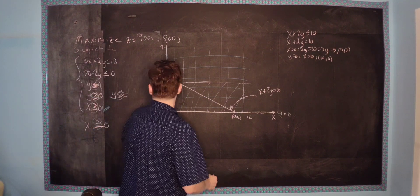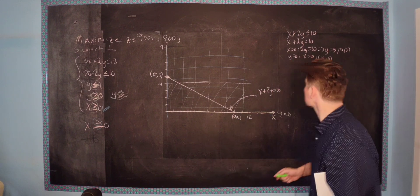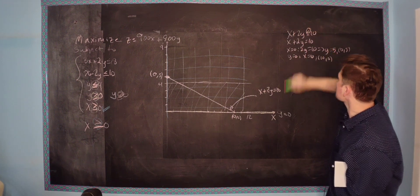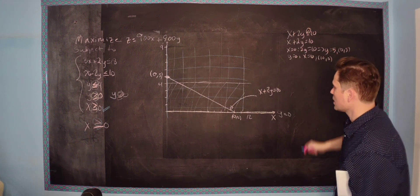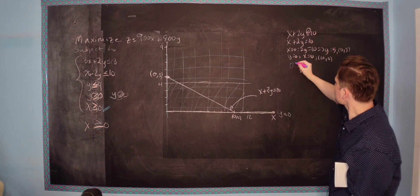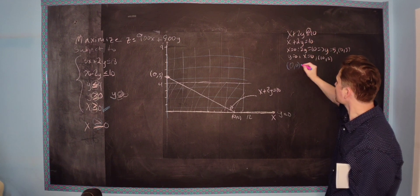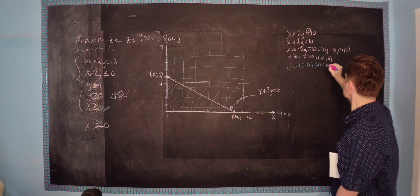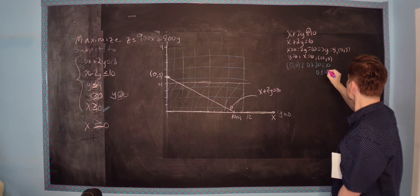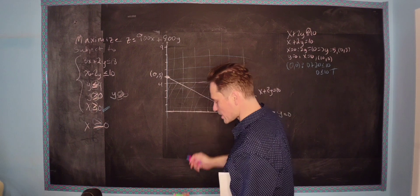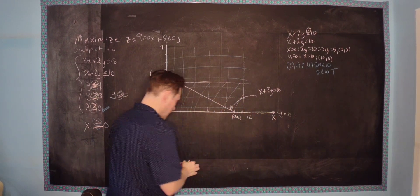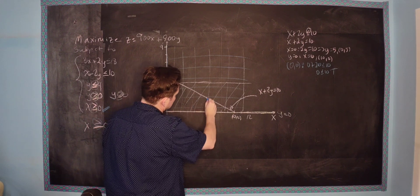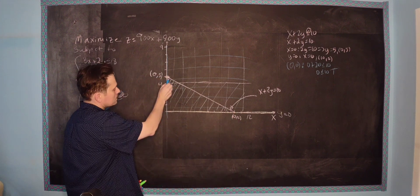Now we have to handle the fact that it's an inequality. The equal-to part marks the boundary line, and the less-than part determines the shading region. If you plug in the origin (0, 0): 0 plus 2 times 0 equals 0, which is less than or equal to 10 — that's true. So you shade below this line, including this little corner here.